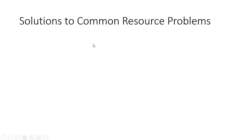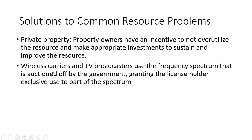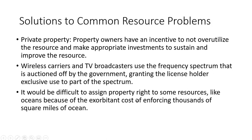Some solutions to the common resource problem: private property. Property owners have an incentive to not overutilize the resource and to make appropriate investments to sustain and improve it. Wireless carriers and TV broadcasters use the frequency spectrum that is auctioned off by the government, granting the license holder exclusive use to that part of the spectrum. However, it would be difficult to assign property rights in some cases, like oceans, because of the exorbitant cost of enforcing thousands of square miles of ocean.